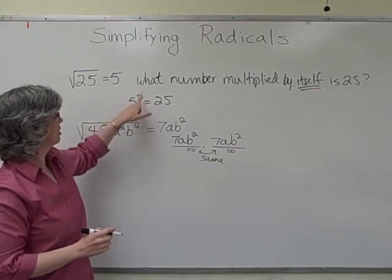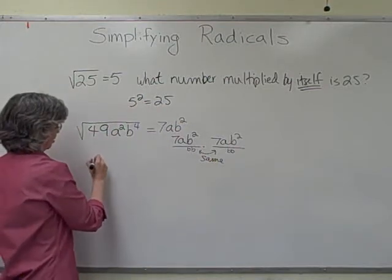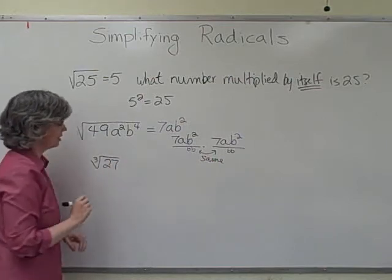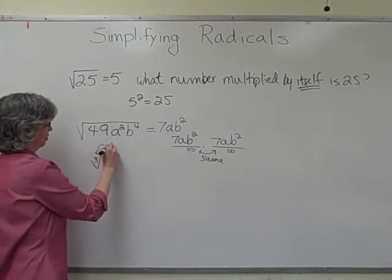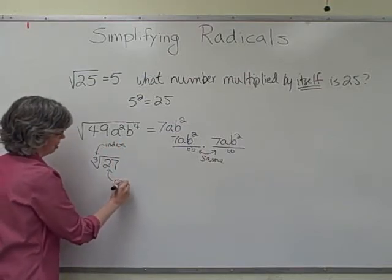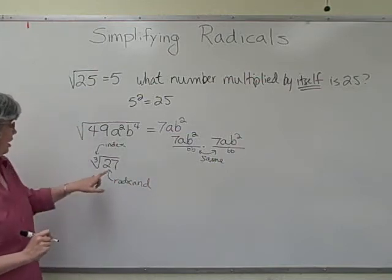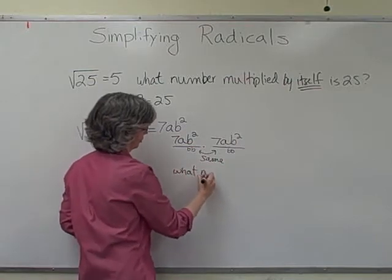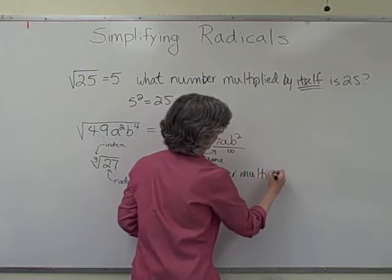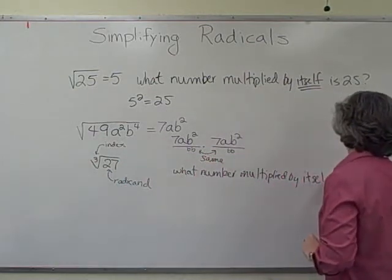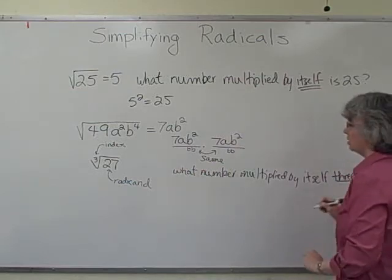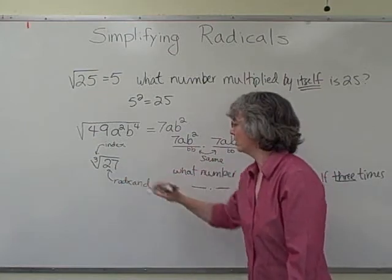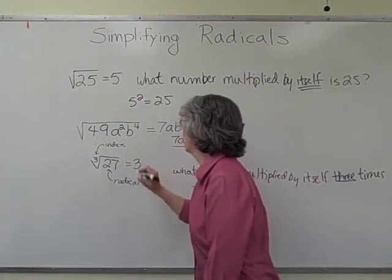Just as we don't limit ourselves to squaring when we do exponents, we don't limit ourselves to square roots when we do radicals. For example, with the cube root of 27, this little number is called our index. Instead of asking what number multiplied by itself, we want what number multiplied by itself three times. Since 27 is 3 times 3 times 3, our answer is 3.